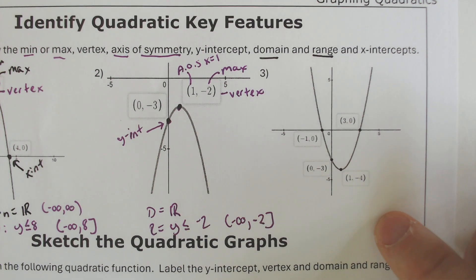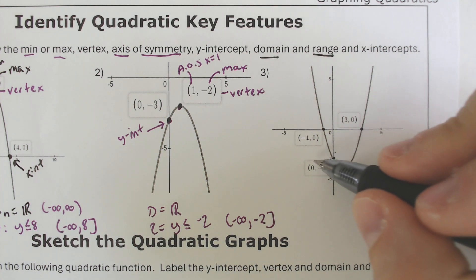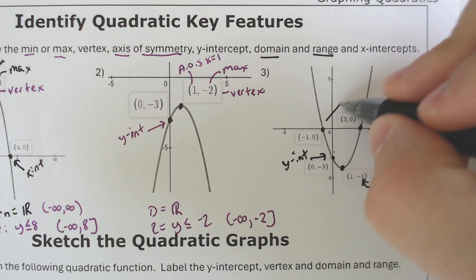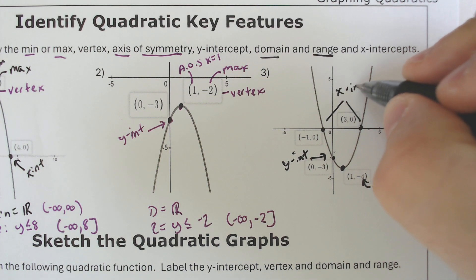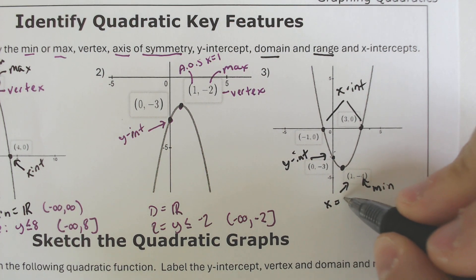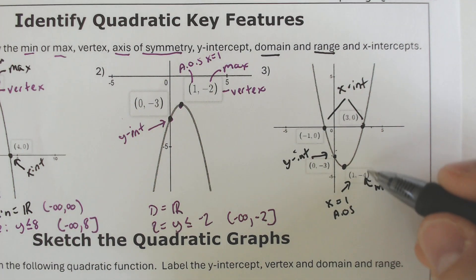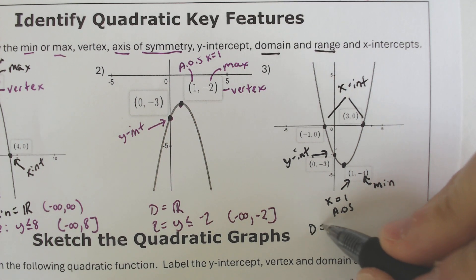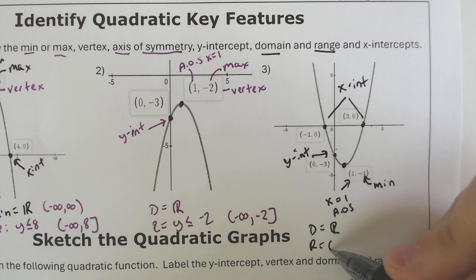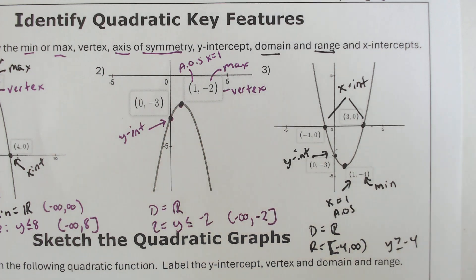The next one — this one is our first problem with a minimum value, because it's facing upward. It has a y-intercept again at negative 3, and it has two x-intercepts here and here. The axis of symmetry would be x equals 1. This point is the vertex as well. Domain is still all real numbers. The range is going to be going up this time from negative 4. So you could say either from negative 4 to infinity, or you could say y is greater than or equal to negative 4.